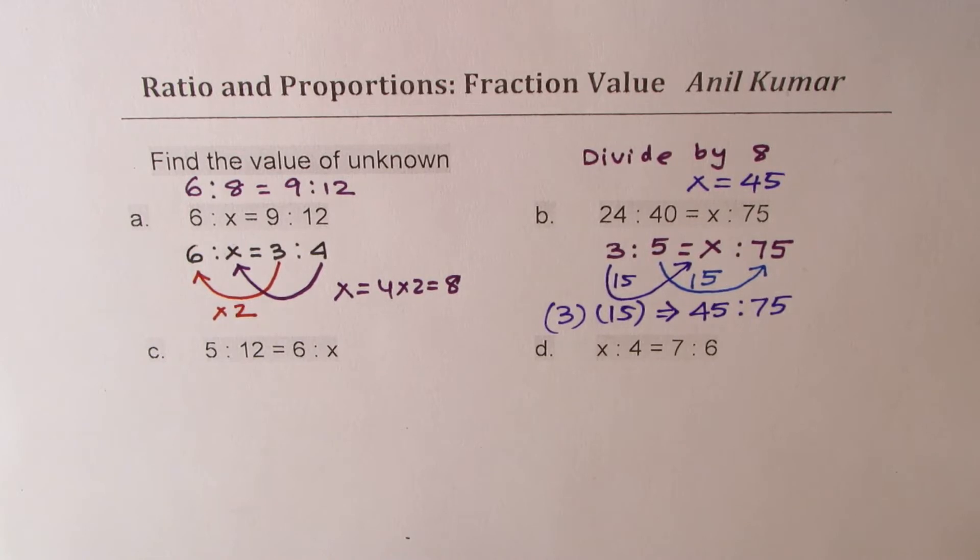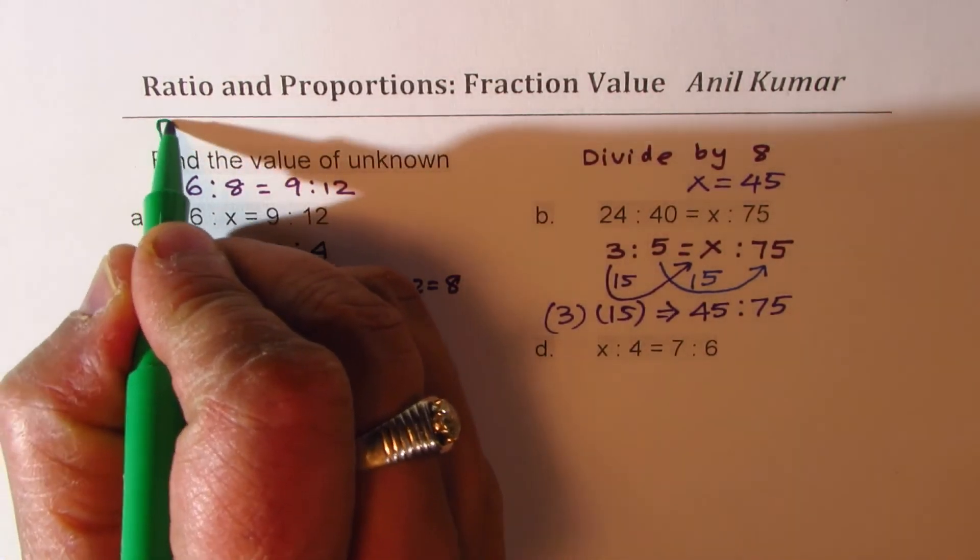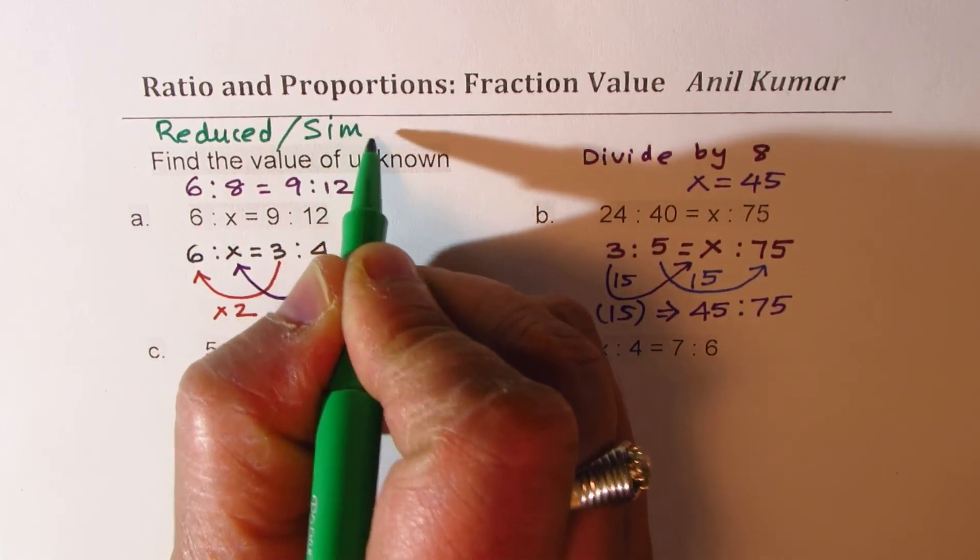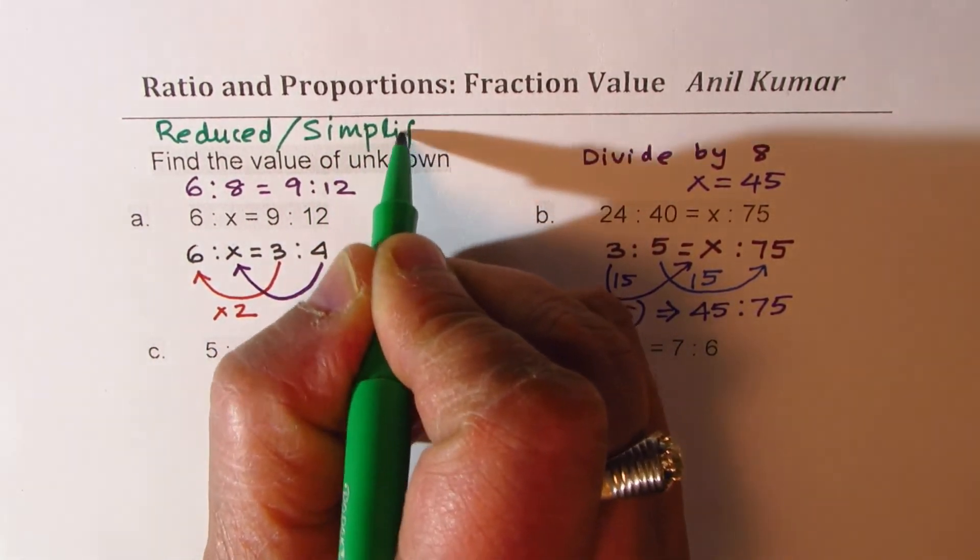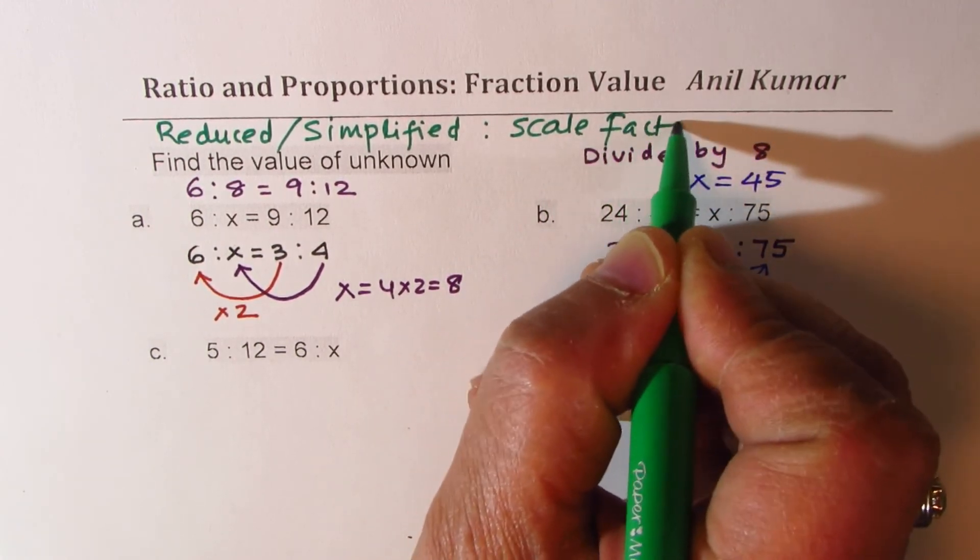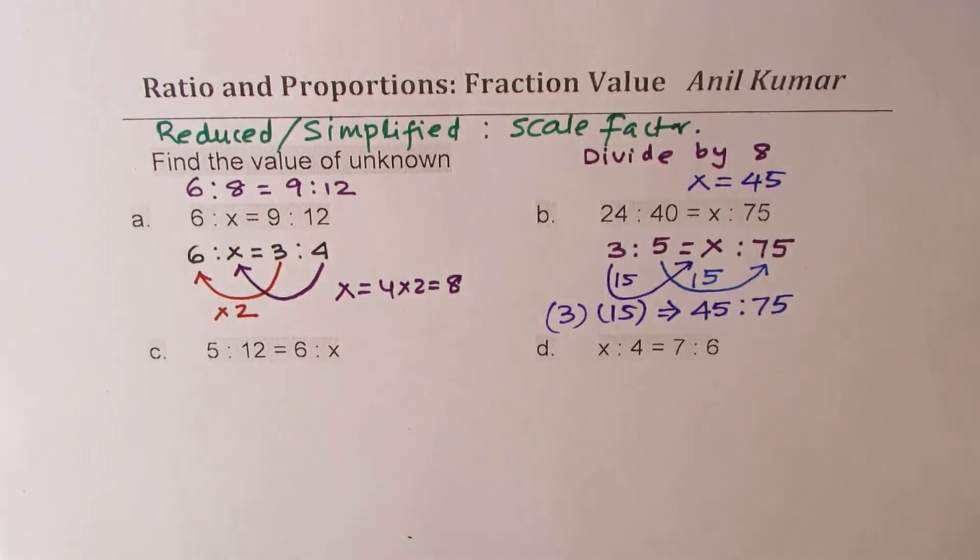So those two were relatively simpler questions where we could use scale factor. So here what we did was we really reduced or you can say simplified and then we use scale factor. Now let's look into the next two examples which look very easy but they do not give you whole number as your solution. Now how should we do these questions?